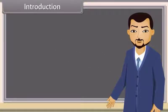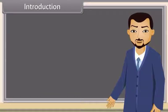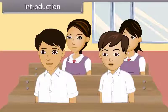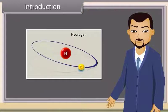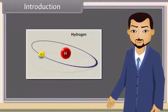Students, now we are going to know about the thing by which matter has been created. Can anyone of you tell me the name of that particular thing? It is atom. Absolutely right. Atom is the smallest thing by which matter is made. Now let us study further to know more about atom.